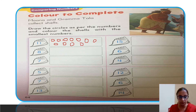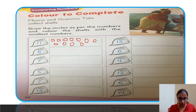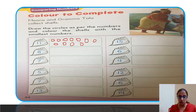And then, color the shells with the smallest numbers. In this row, whichever shell has the smallest number, we will color that one. The numbers are eleven, eight, seven, five, seven, thirteen — so the smallest is five. You will color the shell with number five.